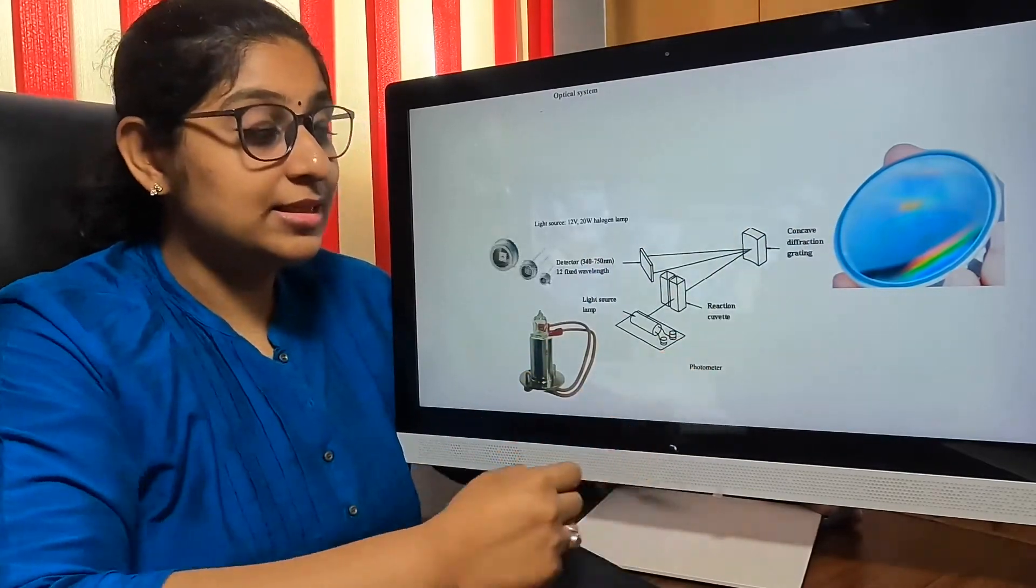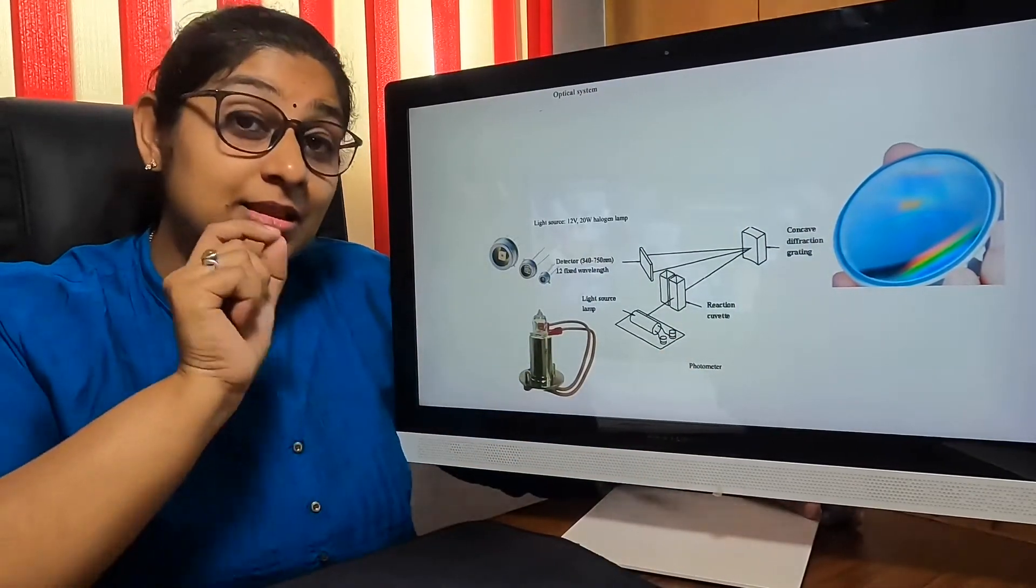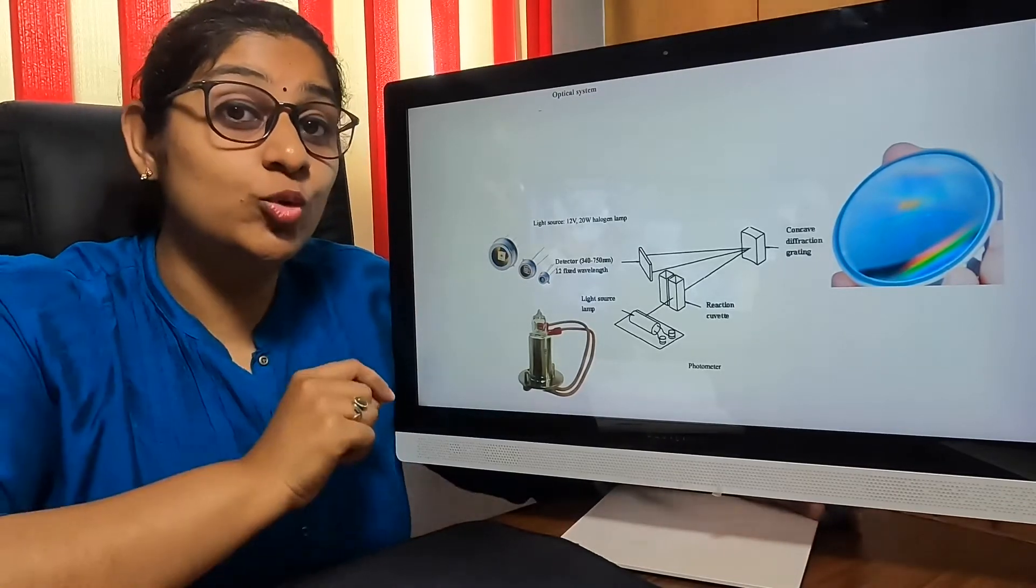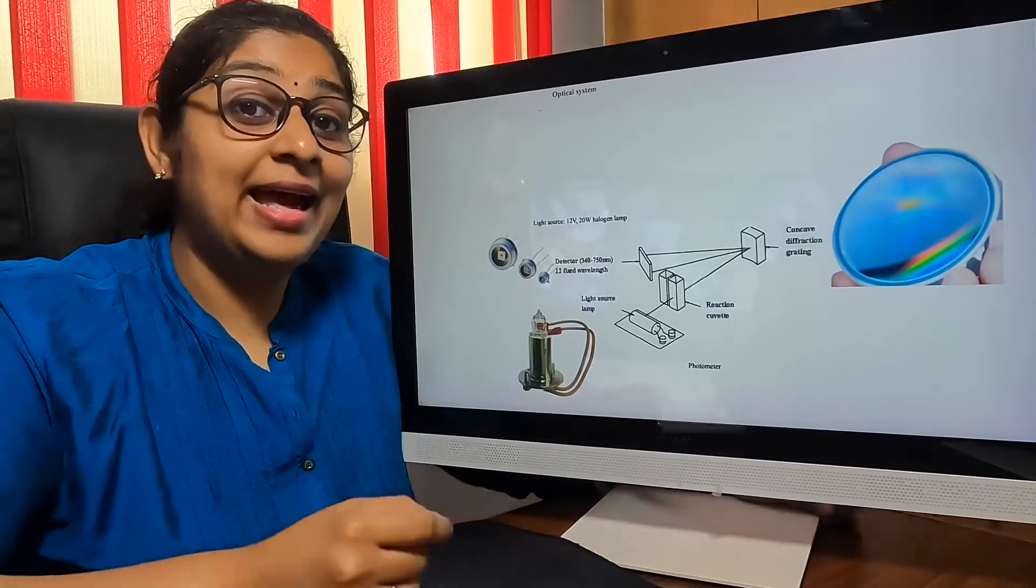From there, what happens is it goes into the amplifier system. This Durabi system specifically has 12 amplifying systems through which it gets amplified.